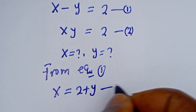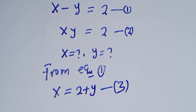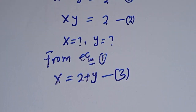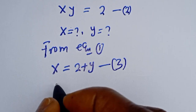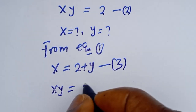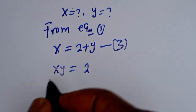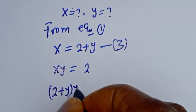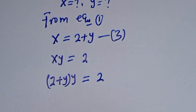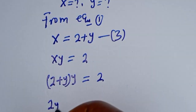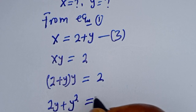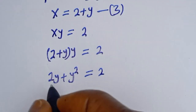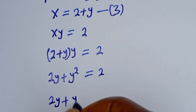From equation 1, x is equal to 2 plus y — let's call this equation 3. Now we substitute equation 3 into equation 2: (2 plus y) times y is equal to 2, which gives us 2y plus y squared is equal to 2.